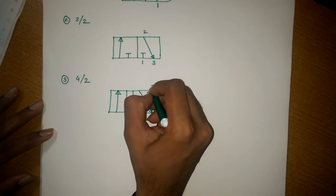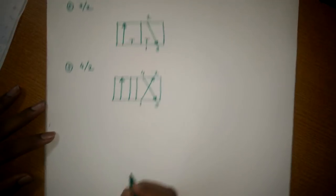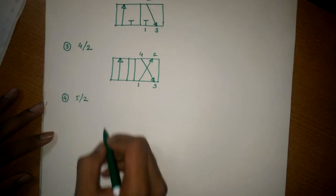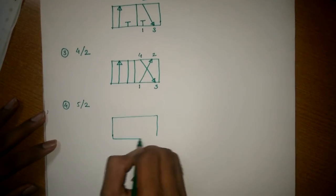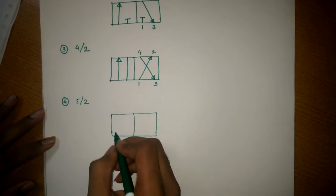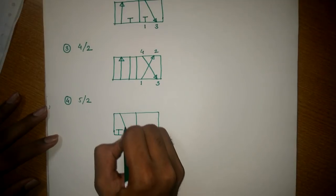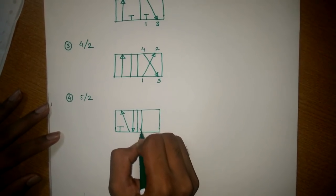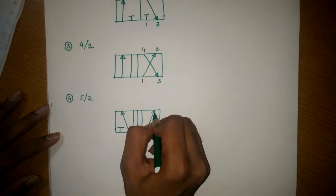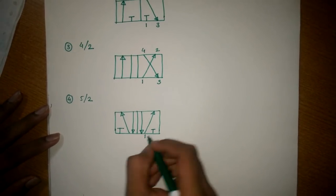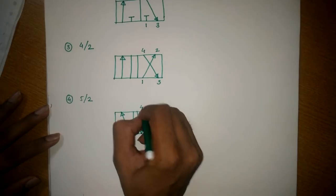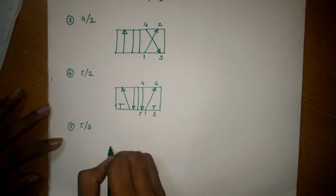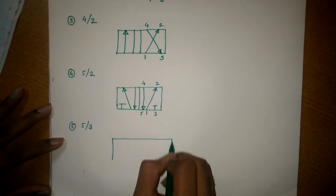For the 4/2 valve, positions are one, two, three, and four. Fourth is the 5/2 valve — this is one, two, three, four, and five. Fifth is the 5/3 valve — here '3' means there are three boxes.